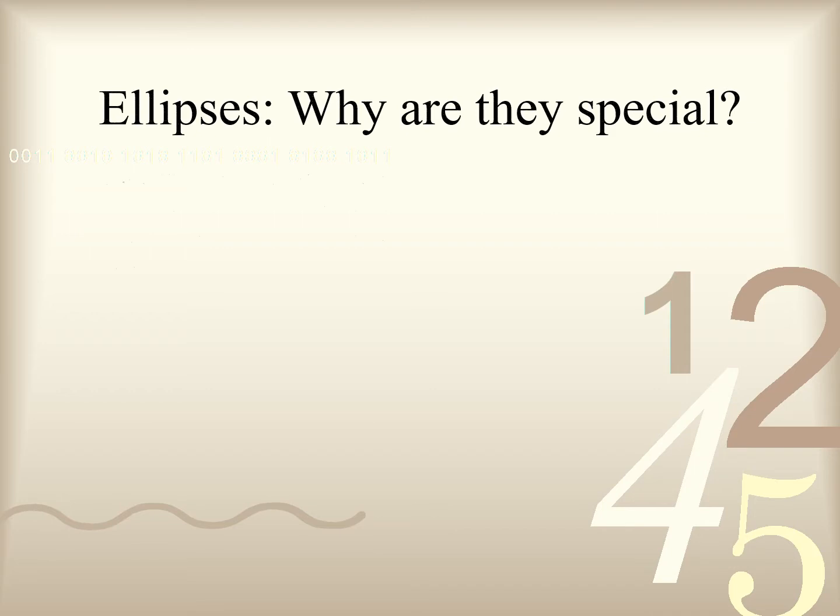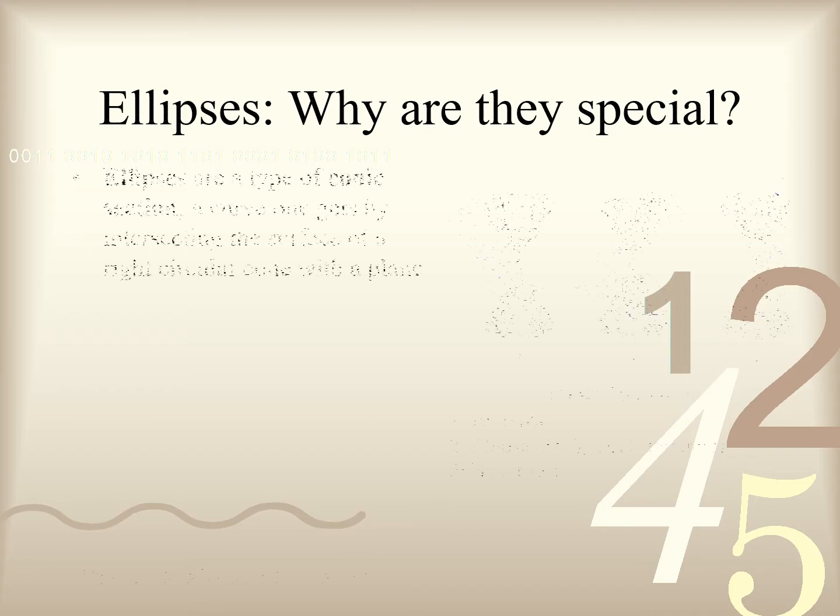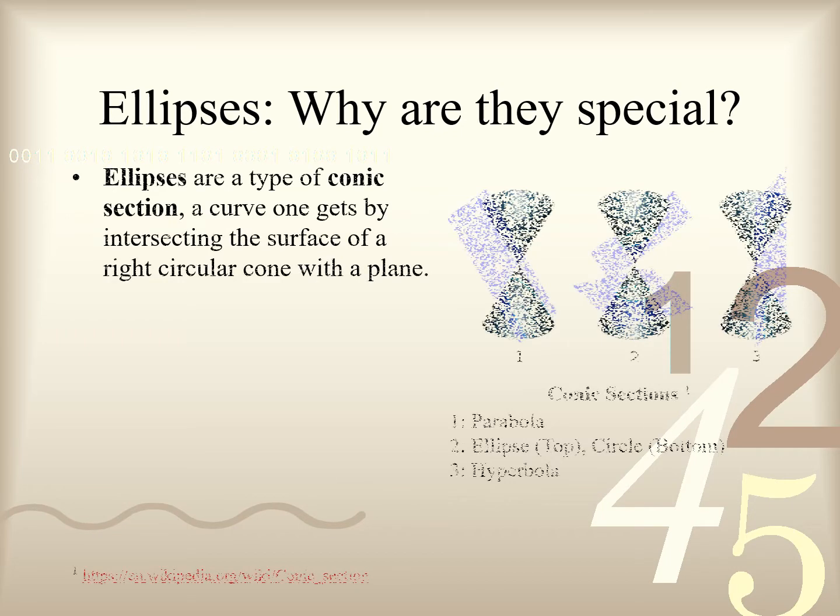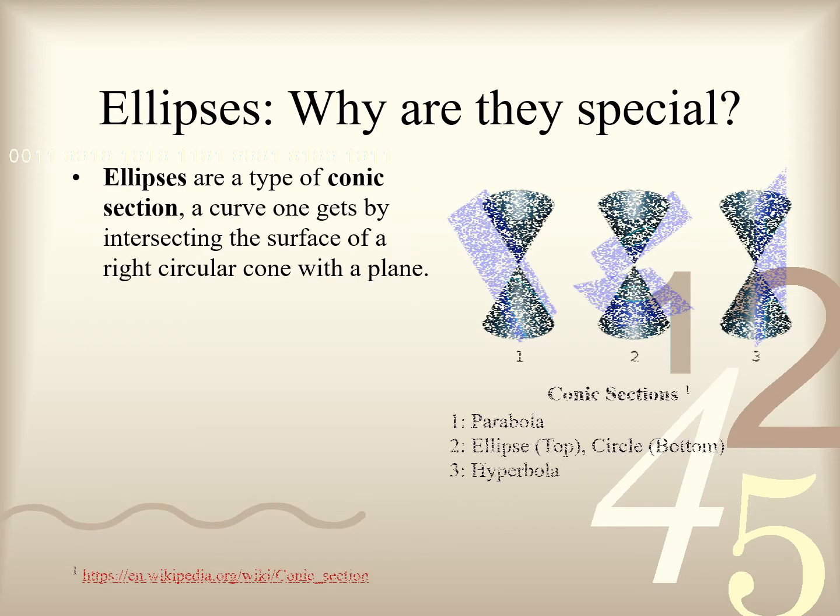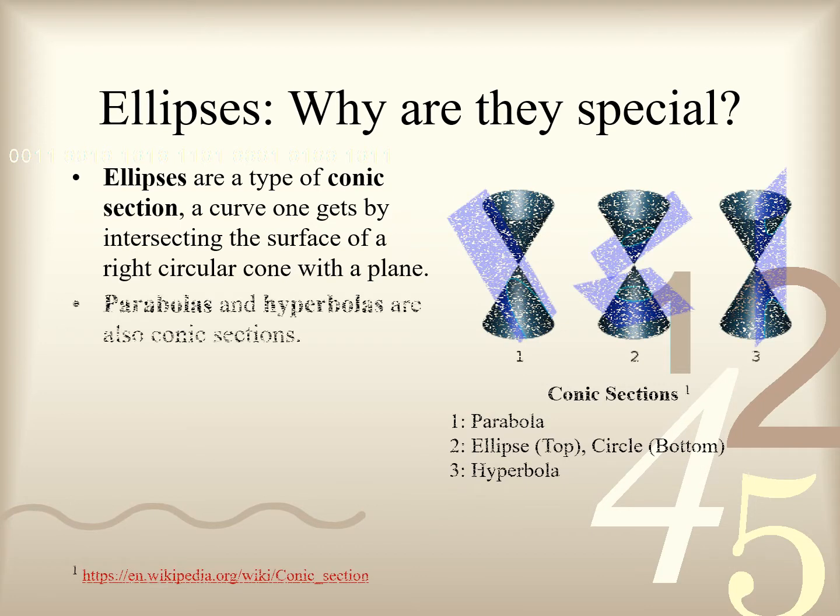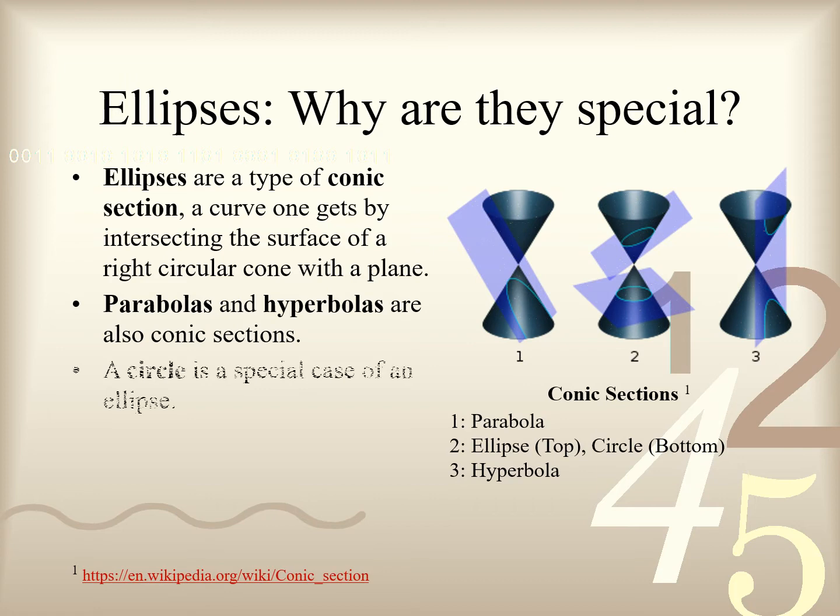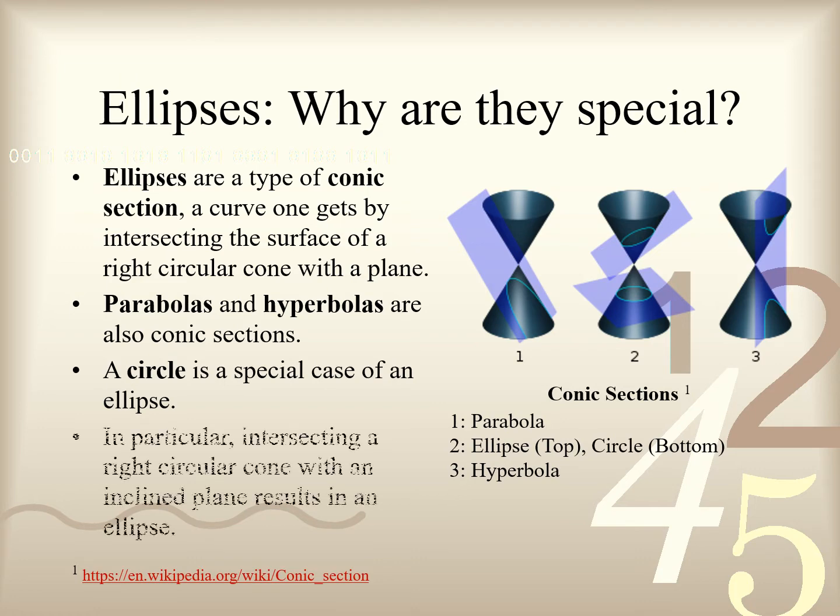A good question to ask is what is so special about ellipses anyway? Well, to start off, they are a type of conic section, which is a curve that is obtained by intersecting the surface of a right circular cone with a plane. In fact, parabolas and hyperbolas are conic sections as well. A little later, we shall see that a circle is a special case of an ellipse. In particular, intersecting a right circular cone with an inclined plane results in an ellipse, as can be seen in the diagram on the right.